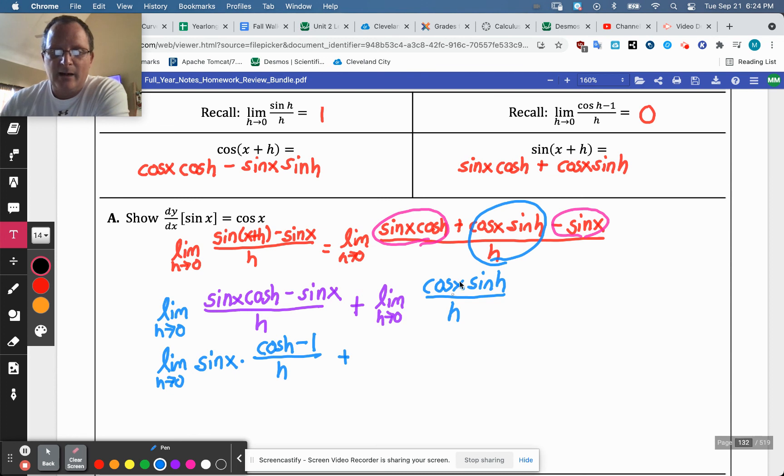But then over here, I can say, all right, well, I'll just write it the same way. So I have this cosine x that's going to be sitting in front of this, and then this sine h over h that's going to go to one as the h goes to zero. That's what our limit says.